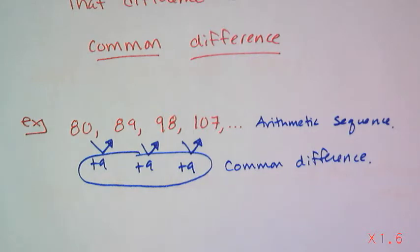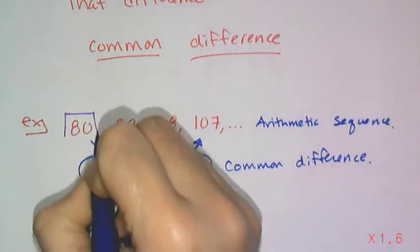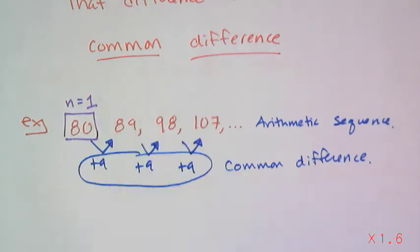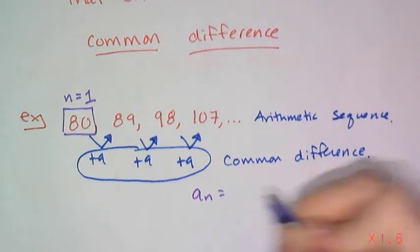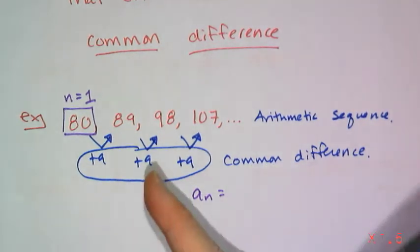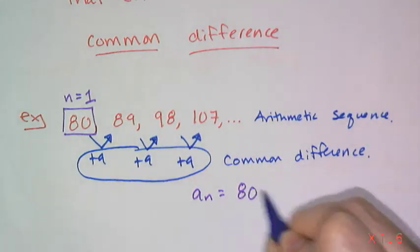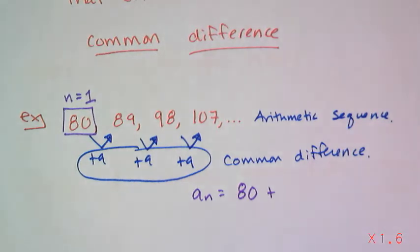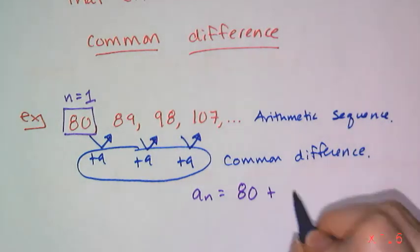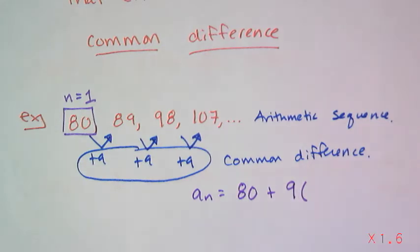And remember, the difference is that this first term is where n equals 1. And so if I want to write the a sub n, or the general term, I can just go ahead and start with that 80, and plug that in there. And I know that I'm going to add 9 over and over again. So it's going to be 9 times something.